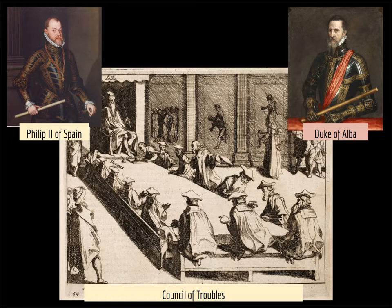During the Reformation, many of those people living in the northern Dutch provinces converted to Calvinism, and they came to resent the imposition of Catholic Spanish power and its resultant taxation, as well as the Catholic Reformation, which seemed to want to obliterate Calvinism in all of the Spanish Empire. In the 1560s, the Dutch began resisting the Spanish presence in their lands. In response, Charles V's son and heir, Philip II, sent the Duke of Alba to the Netherlands with 10,000 troops in 1567.